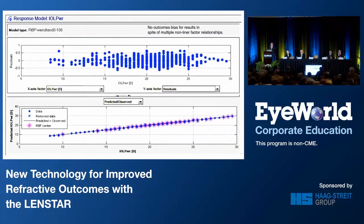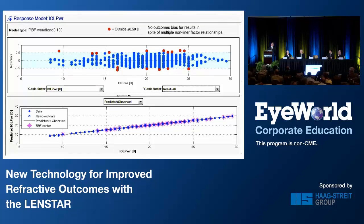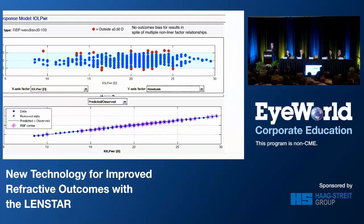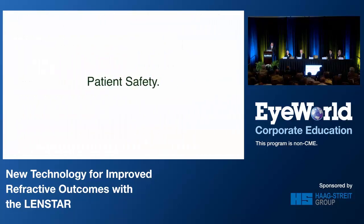With some of the initial testing, one of the first things that popped out was that there's no calculation bias. This methodology doesn't know that it's a long eye or short eye — all it knows is it's a pattern, and it does best where it has the greatest amount of data. This is one of our very first efforts of about 600-something cases, showing our half-diopter accuracy. Right from the beginning, we knew we were onto something pretty nice.